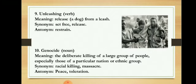Next is Genocide — meaning the killing of a large number of people, especially targeting a particular religion or ethnic group or nation. For example, when a group decides to kill members of a specific ethnic or religious community, that is genocide. Synonyms are racial killing and massacre; antonyms are peace and toleration.